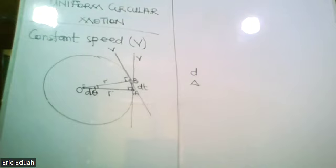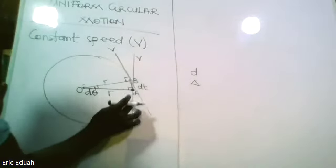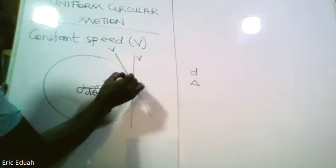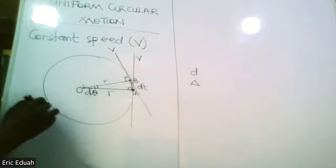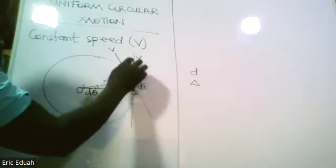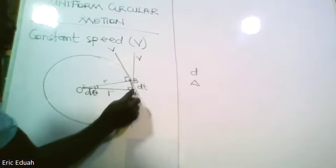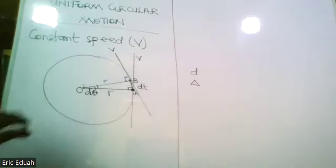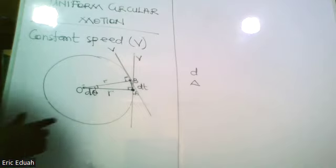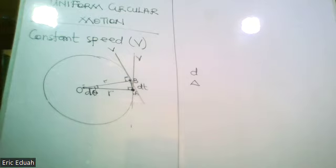The body is moving with a constant speed — say, 5 meters per second at A and also 5 meters per second at B. The speeds are equal, and both are tangential to the radius, meaning they make an angle of 90 degrees with the radius.